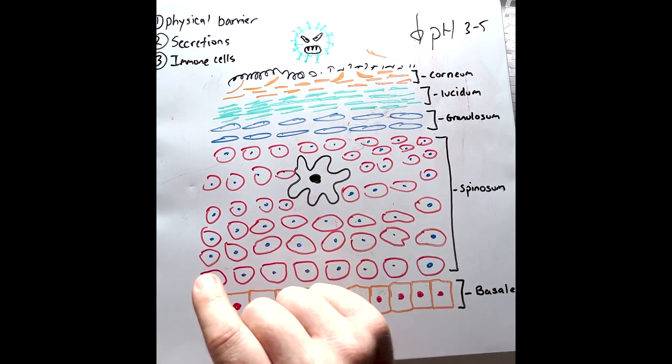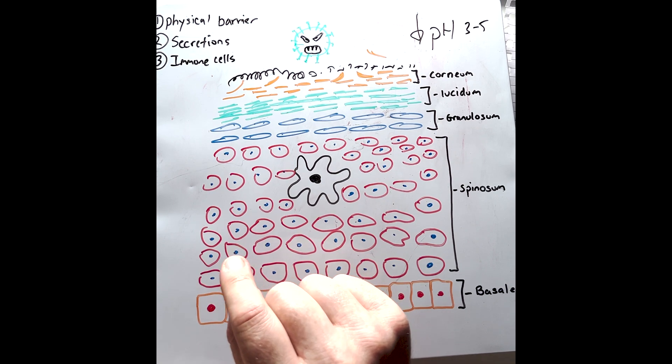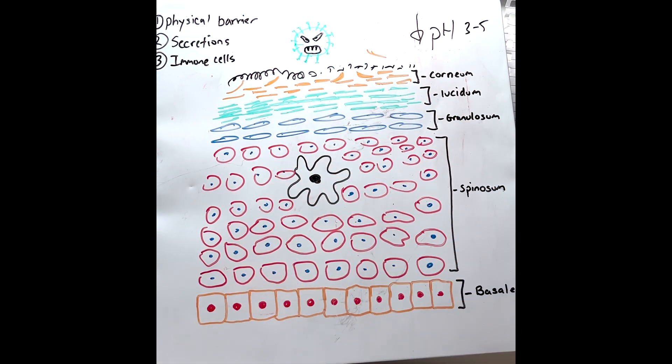Sweat contains an important protein called dermocidin, which helps to destroy bacteria and fungi.